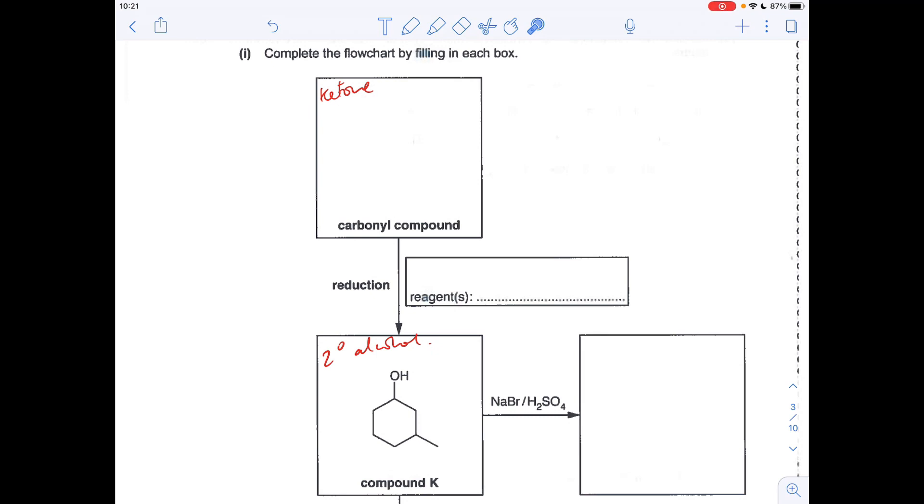So this is going to be a ketone. So we just need to draw the corresponding ketone, which looks like that. And the reducing agent is NaBH4.